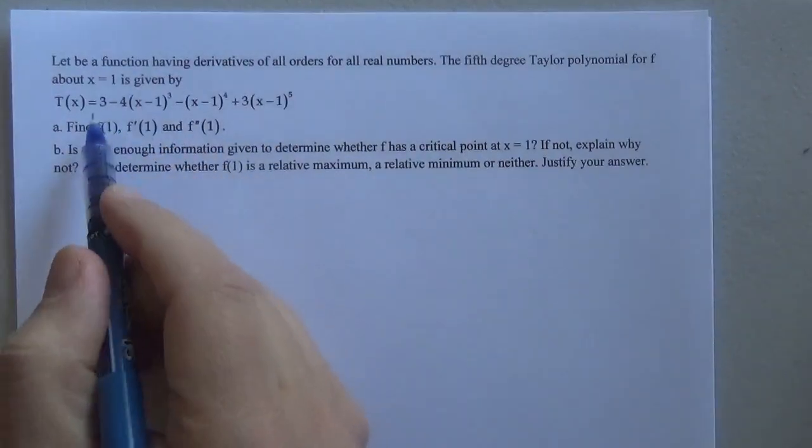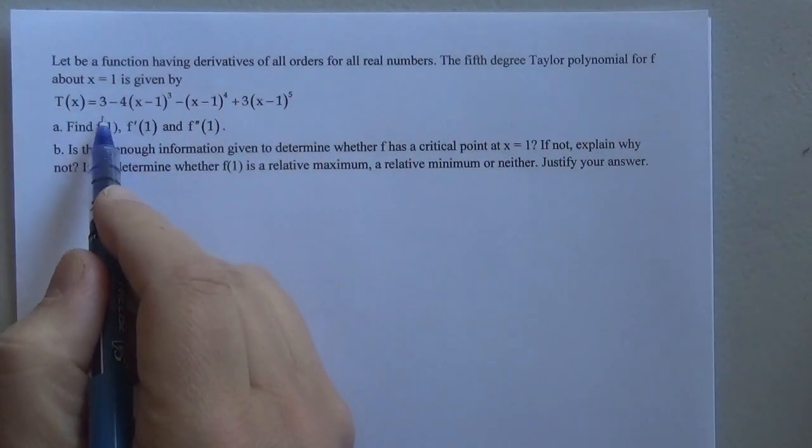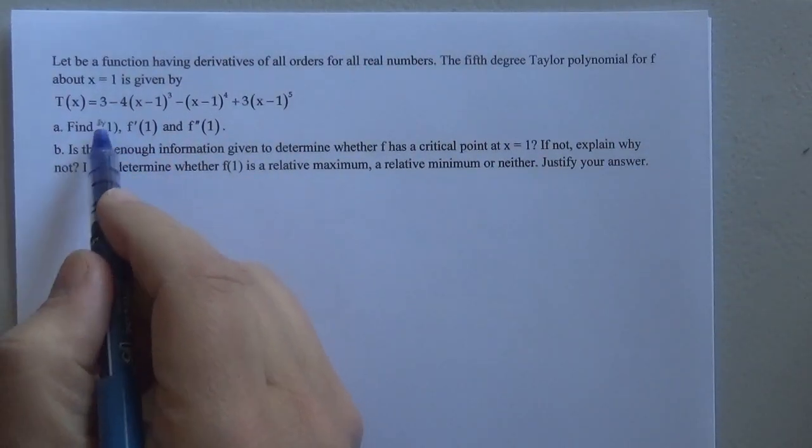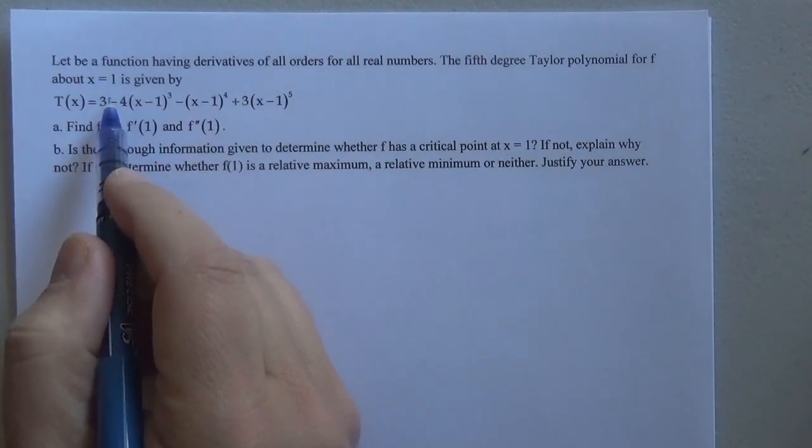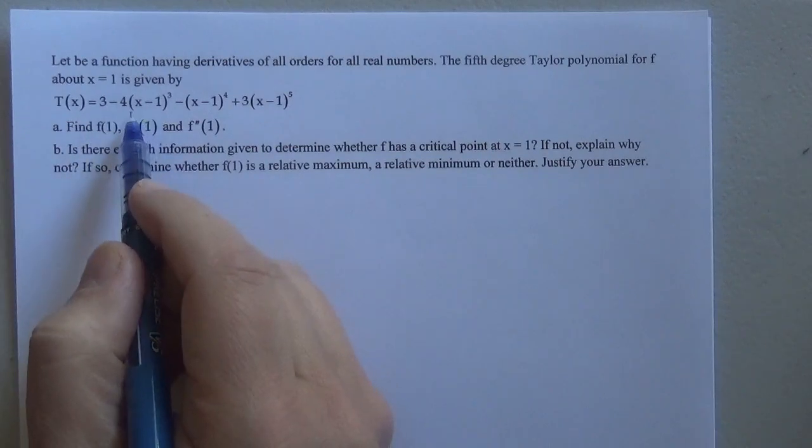So hopefully you're getting the gist here, is that my function value, or f of 1 or t of 1, is just going to be here. There's no linear term, so therefore the first derivative is going to equal 0, and there's no squared term.